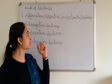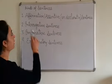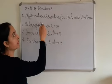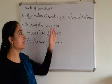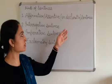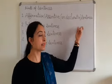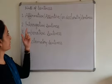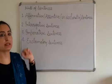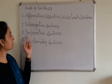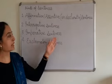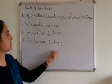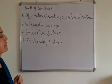Now, kinds of sentences. Number one: affirmative or assertive sentences, also called declarative sentences. Number two: interrogative sentences. Number three: imperative sentences. And number four: exclamatory sentences.